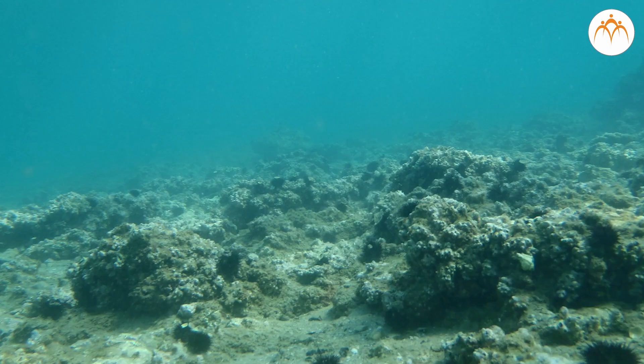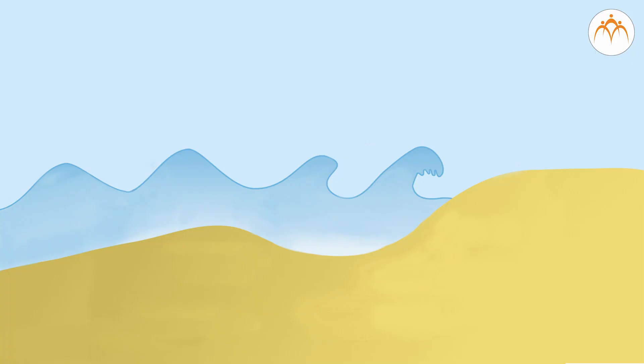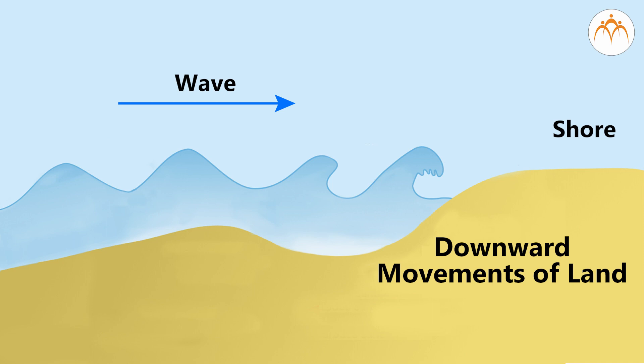Friends, have you ever thought about the formation of this landform? As described earlier, this is the piece of land which is submerged in sea. Is it due to the increased level of the sea base or elevation of the land in sea? It is observed that due to the downward movements of land, the land shows subsidence which is covered by sea water, hereby forming the platform under the ocean water.